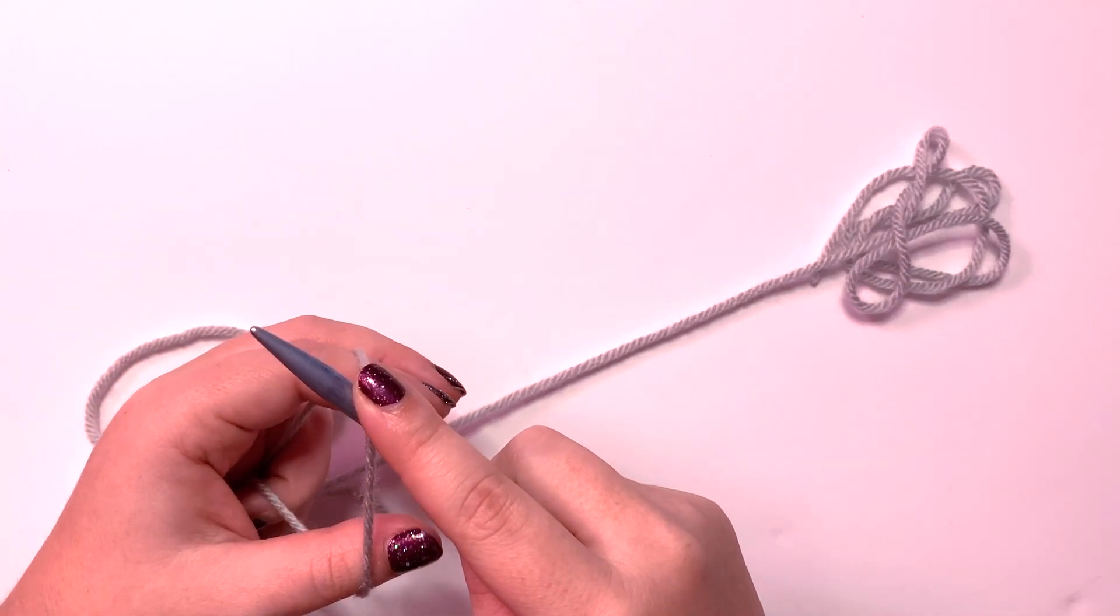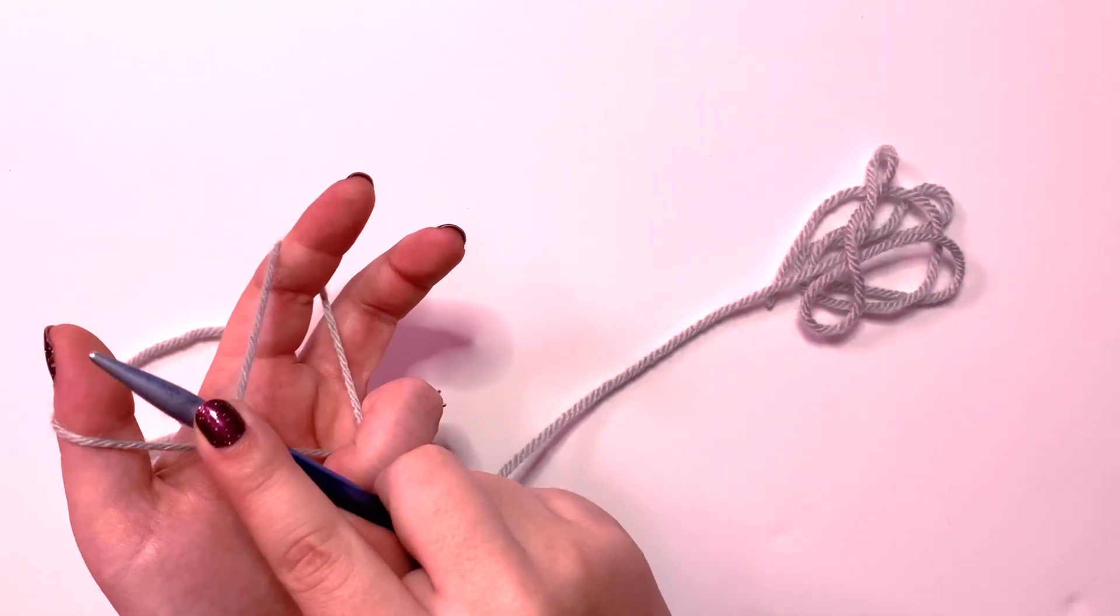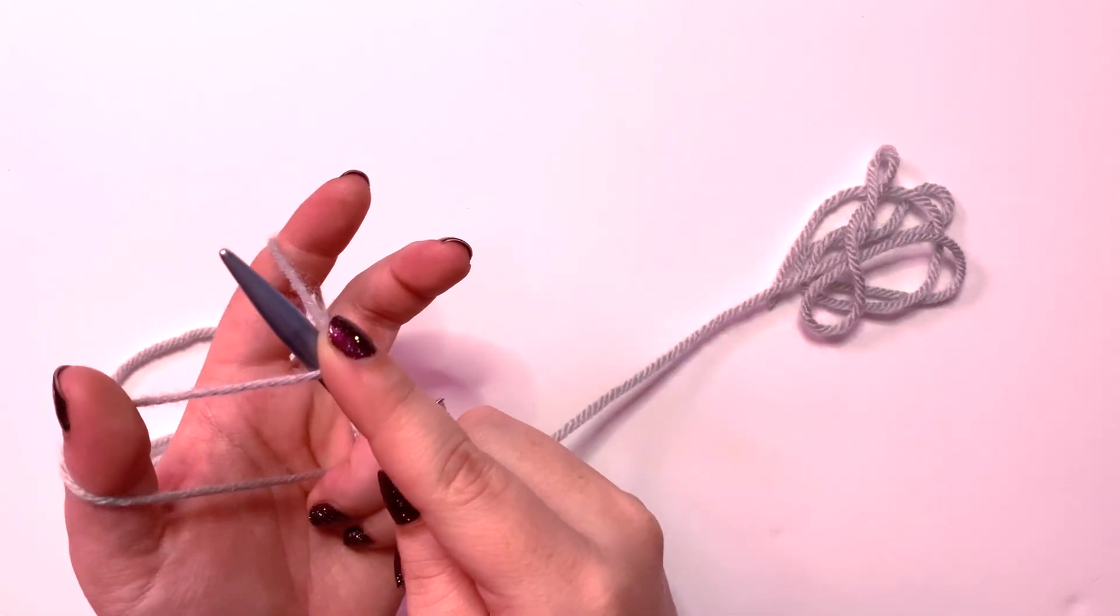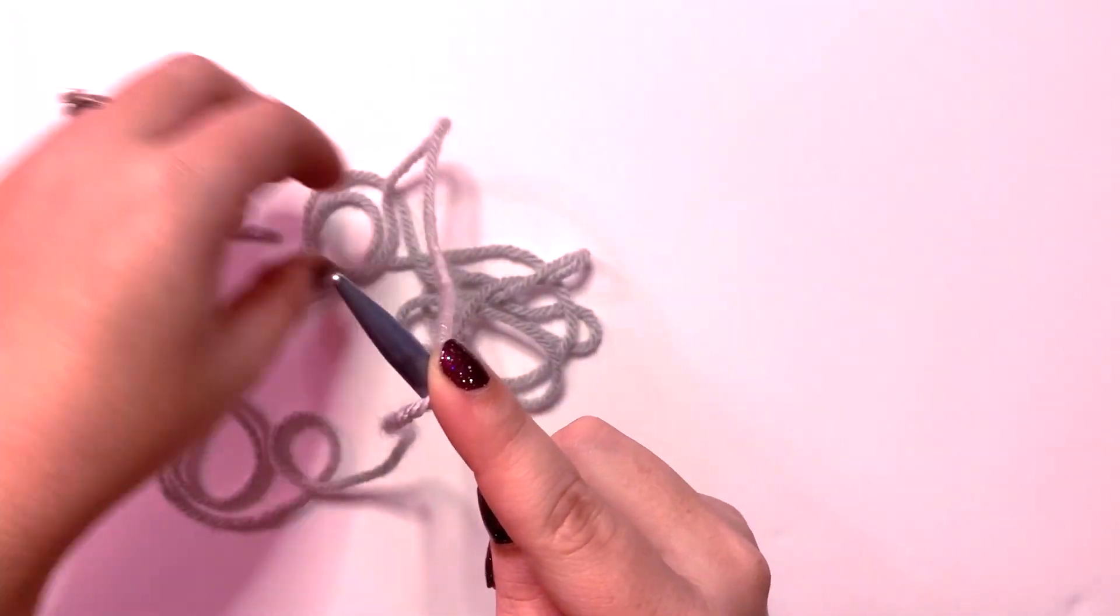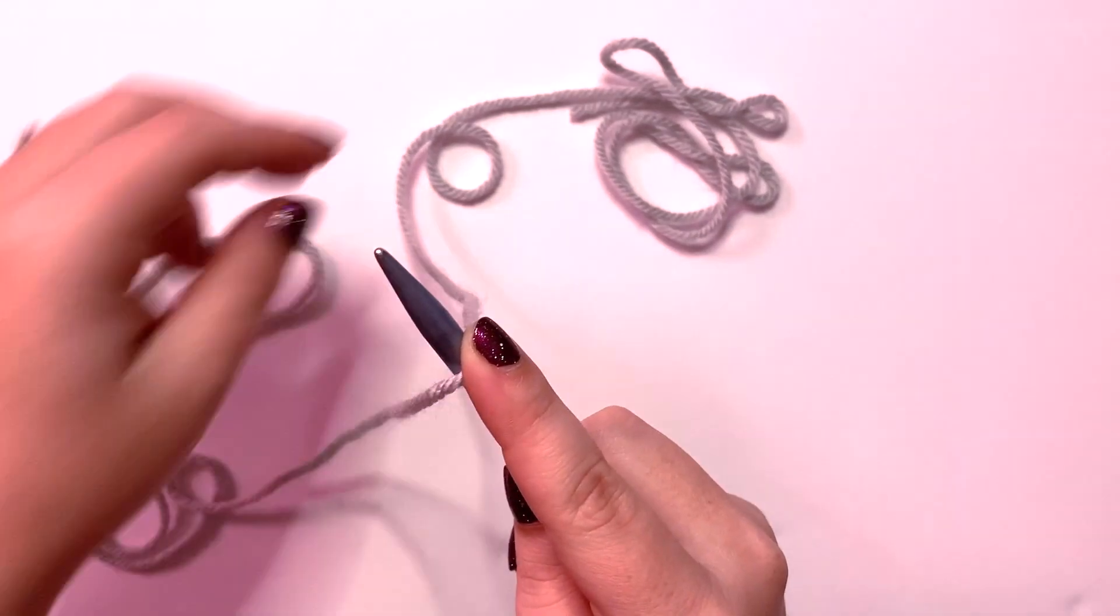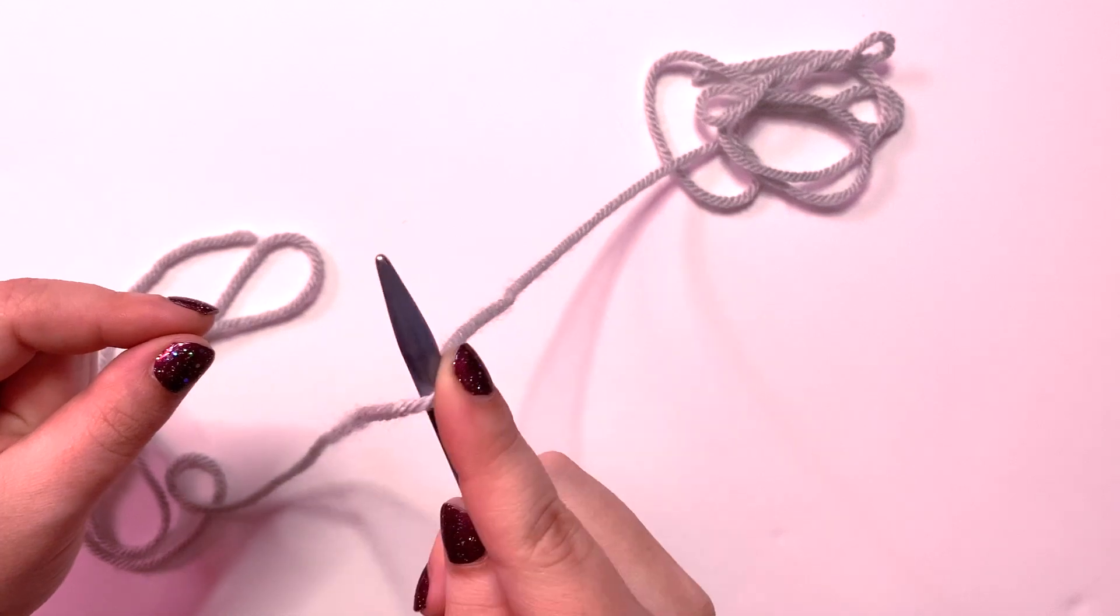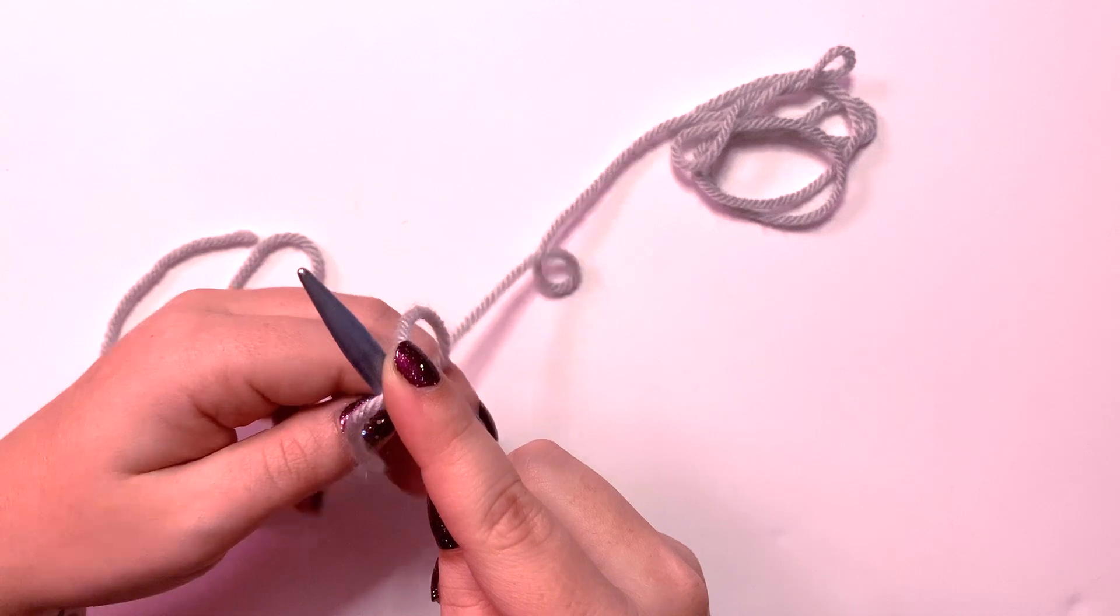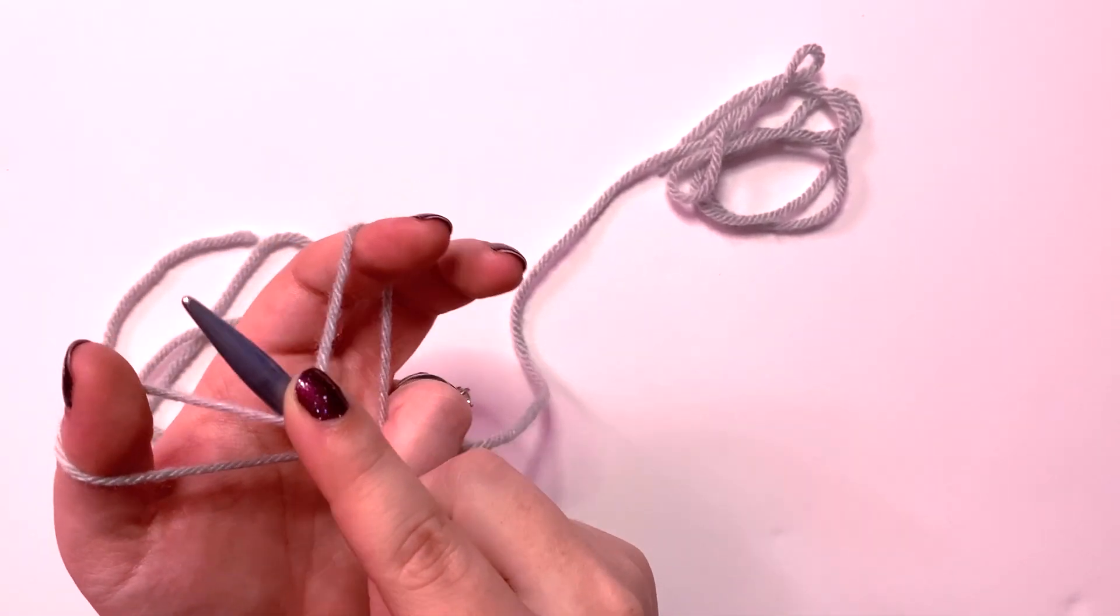If you can see that, I have the tail on the front, the ball of yarn is attached to the back. You're going to take your pointer and your thumb, put it between the yarns behind the needle, grab it with your other fingers and pull them out into a slingshot. This is the starting position for the long tail cast on.